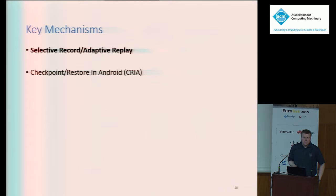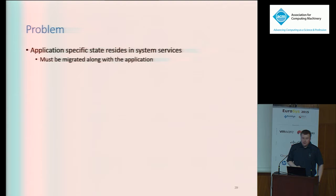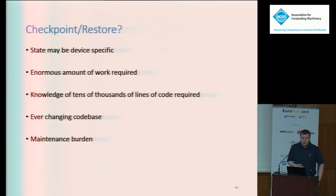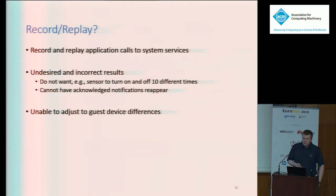The first key mechanism is selective record adaptive replay — I'll focus on selective record and leave adaptive replay for the paper. To migrate apps correctly, we have to migrate the app-specific state that resides within the system services. One approach would be to add checkpoint and restore hooks to all of the system services and extract and inject that app-specific state. But this won't work because some state may be device-specific. And even if we could overcome that, implementing these hooks requires knowing the fine-grained implementation details of every system service — the time required just to understand what needs to be checkpointed would be substantial.